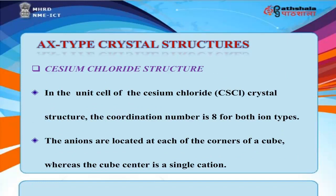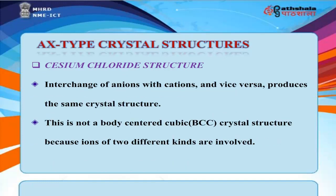In the caesium chloride (CsCl) crystal structure, the coordination number is 8 for both ion types. The anions are located at each corner of a cube, while a single cation sits at the cube center. Interchange of anions and cations produces the same crystal structure. This is not a body-centered cubic (BCC) structure because ions of two different kinds are involved.